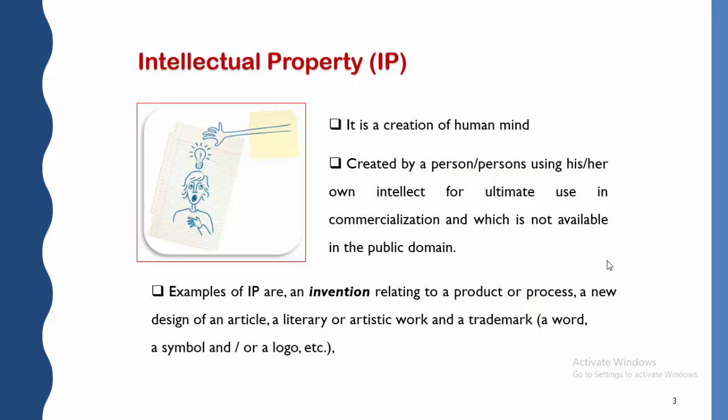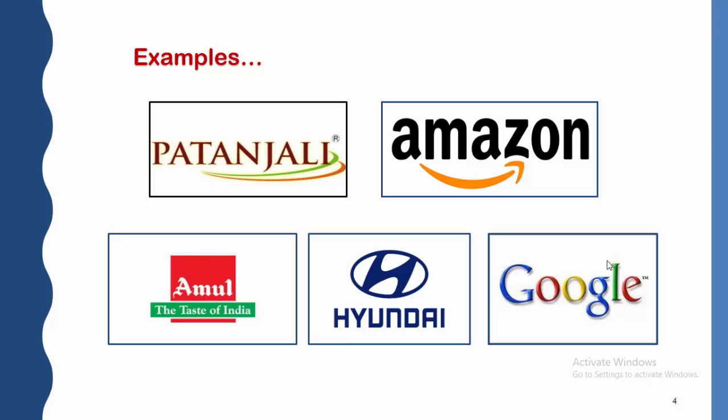Some examples of intellectual property include the name of Patanjali, Amazon, Amul — 'The Taste of India' — the logo of Hyundai, and the Google homepage. All of these are creations of the human mind and are intellectual property. Intellectual property is an intangible property — it is not a physical property. Tangible properties are things like a car, land, or a home. Intellectual property, being a human creation of the mind, is intangible.